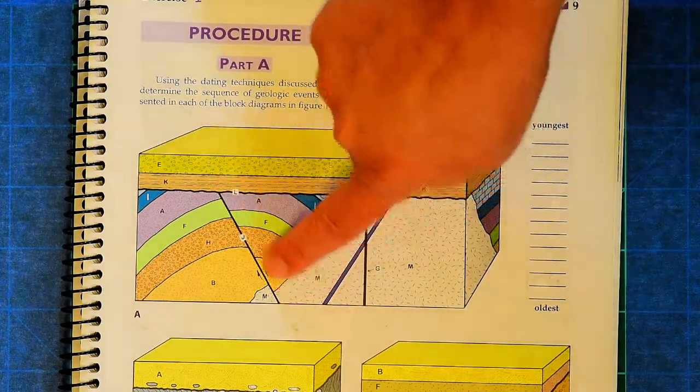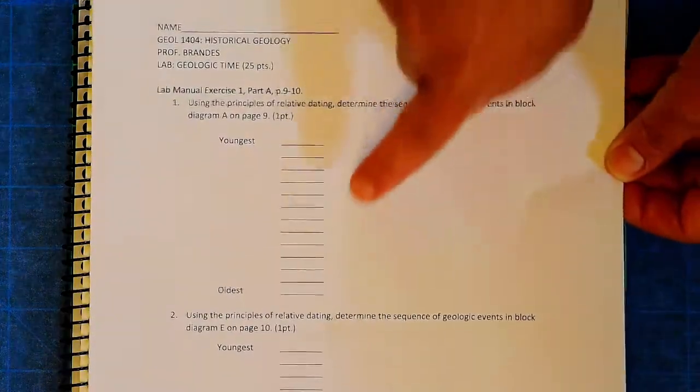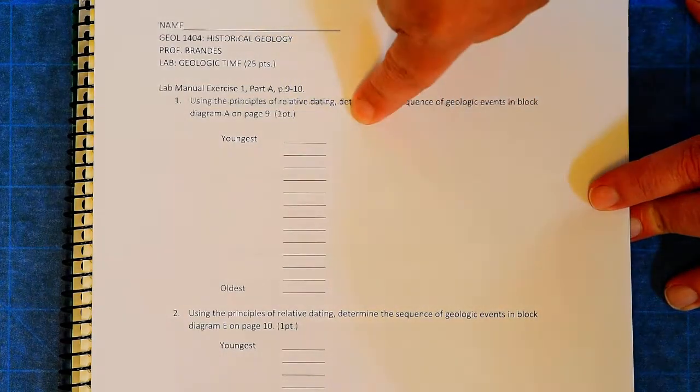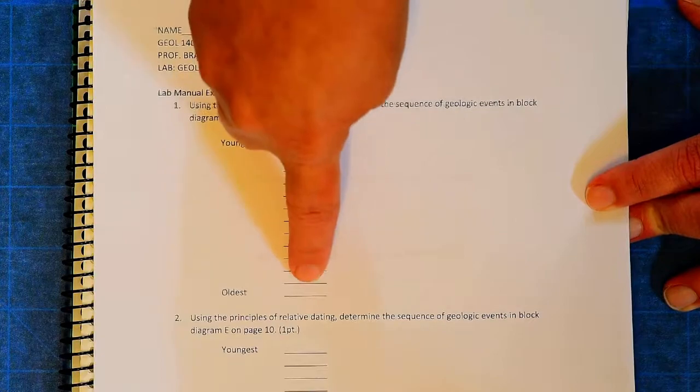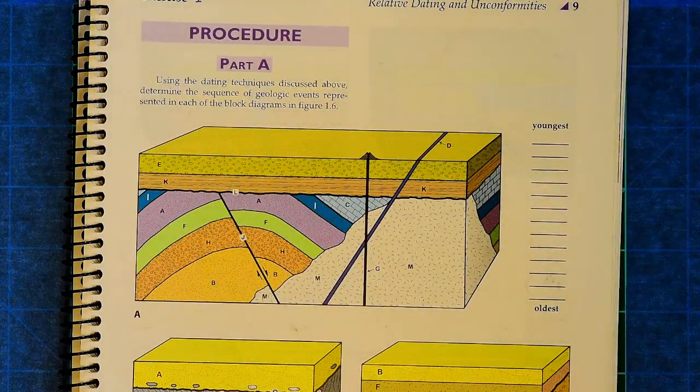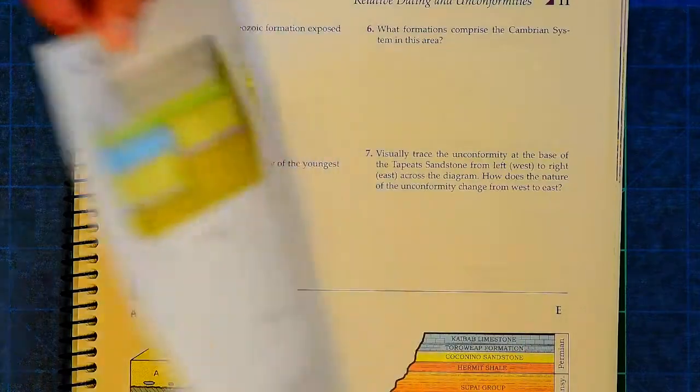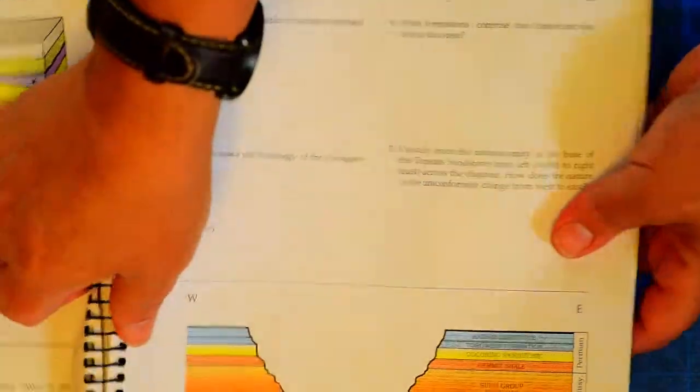And make sure you include things like the fault that's right here. And you will list them on your lab here. Remember, superposition says we list the oldest at the bottom and the youngest at the top. And so that's going to be your first few things that you work on.